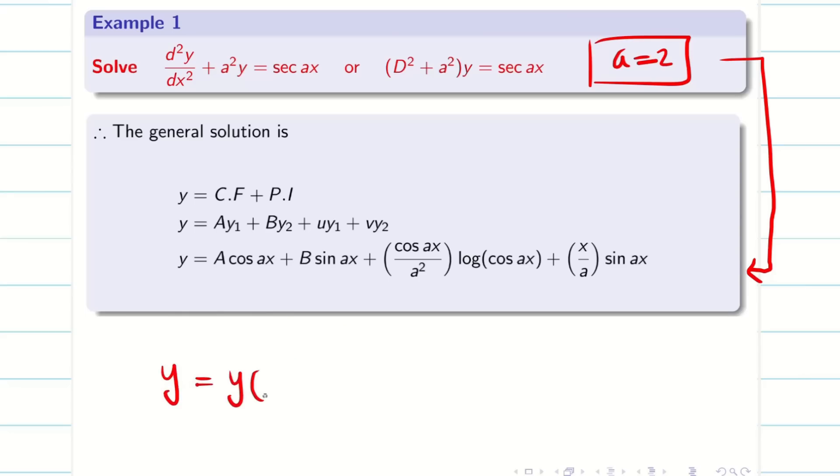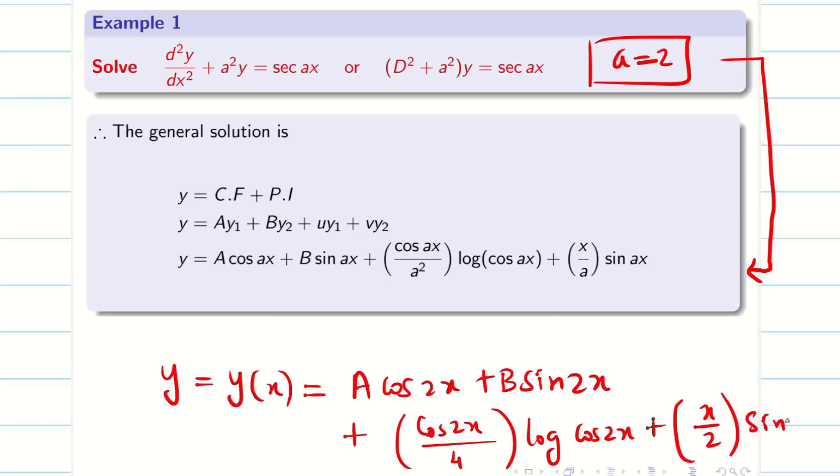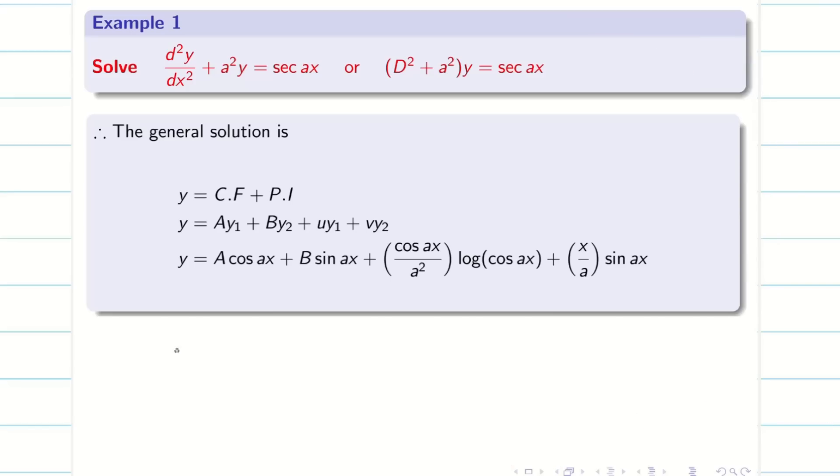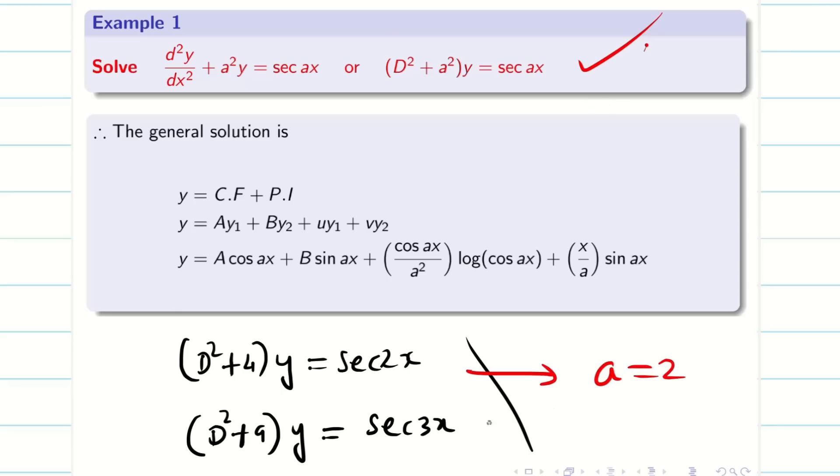Then, we will be getting y is nothing but y(x). That is, A cos 2x plus B sin 2x plus (cos 2x)/4 log cos 2x plus (x/2) sin 2x. Hope you understand, students. So, whatever they ask, they may ask like d² + 4 into y secant 2x or d² + 9 into y secant 3x. Any number. Identify the number. Just assume the general formulae. Solve it and put your a equal to 2 for this problem at the end.